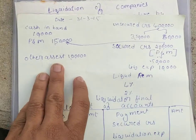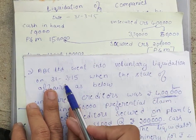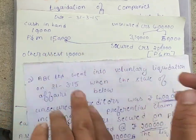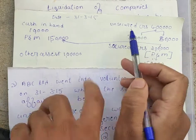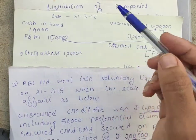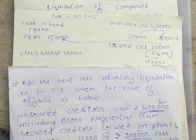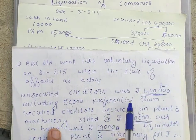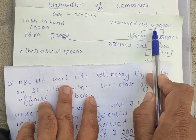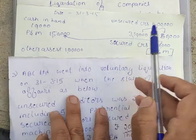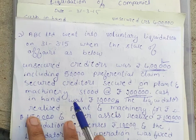The date of liquidation started on 31st March 2015 — voluntary liquidation. The unsecured creditor amount is 4 lakh. Liquidation is about how much asset we realize and paying off all liabilities. We sell all company assets and pay all liabilities in a specific order. Unsecured creditor is 4 lakh, which includes 50,000 as a preferential claim, so the remaining unsecured creditor amounts to rupees 3 lakh 50,000.